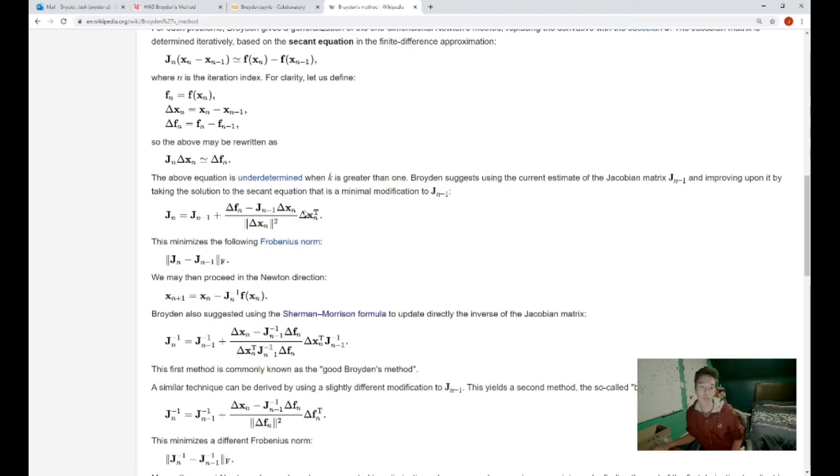multiplied by the change in our x values transposed so that we can get the equal number of unknowns and equations and then we're going to be dividing that by the norm squared of our delta x values. And once we have this we are able to automatically calculate our new Jacobian matrix with our rank one updates and solve our minimization problem.